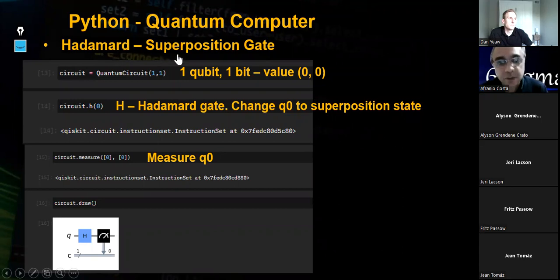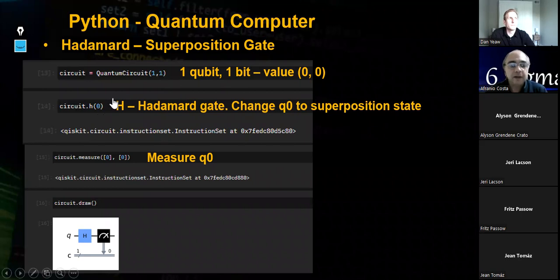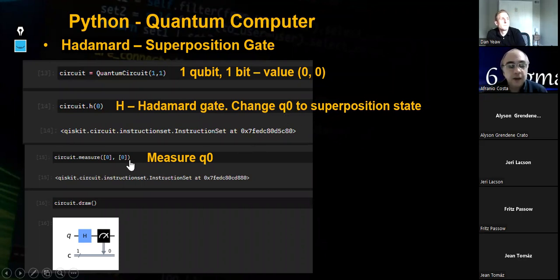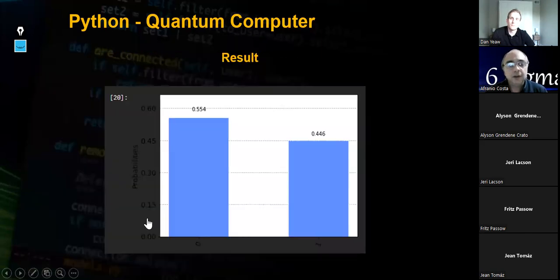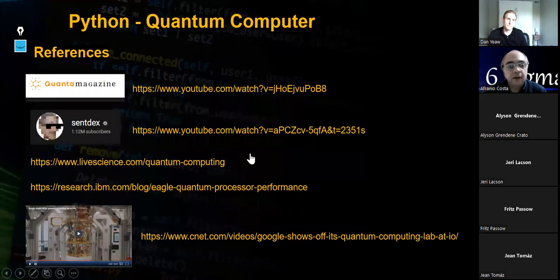And here I use a Hadamard gate, a superposition gate. In the same way I will create the circuit. Now one qubit and one bit is enough. I create the Hadamard gate in this qubit and change the q0 qubit to the superposition state. And here I measure the qubit zero. As I said, we have 50% of probability to get one and 50% probability to get zero if the qubit is in a superposition state. Here we can see the circuit. And here we can see the results. One more time the system is affected by the electromagnetic waves, temperature variation, and so on. And we have 56% of zeros and 44% of ones.